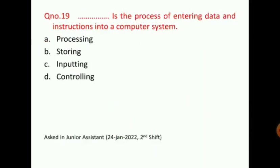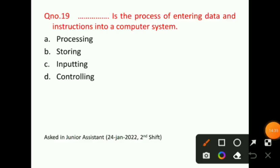Question number 19: A blank is a process of entering data and instructions into a computer system. You have to name the process in which we give data or instructions to the computer as input. The correct answer for question number 19 will be option C, that is, inputting. This question was asked in a junior assistant shift.